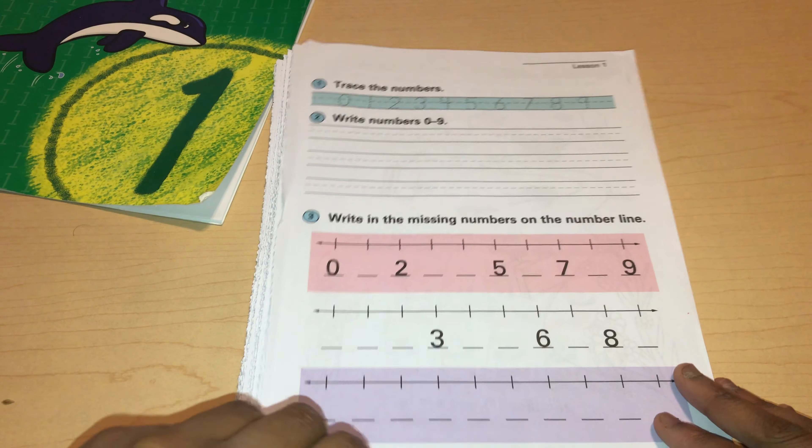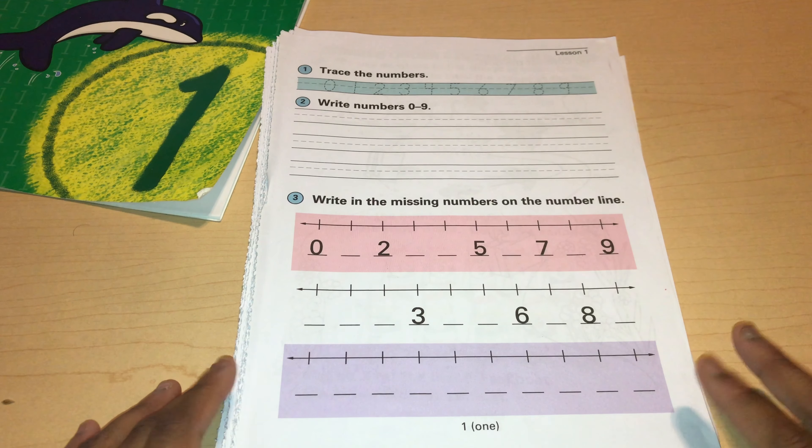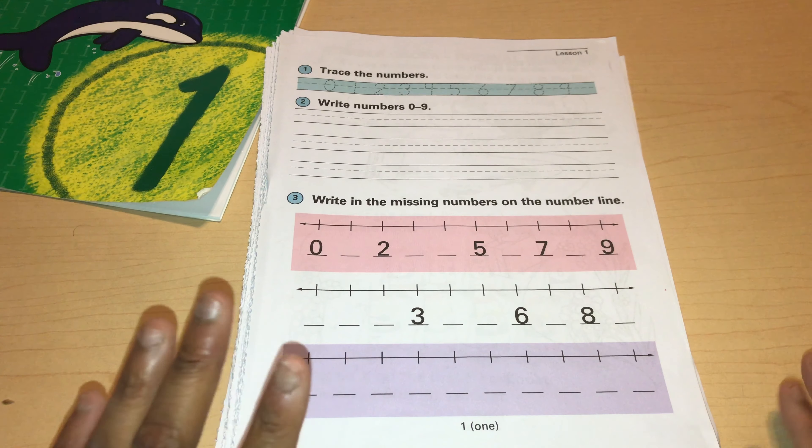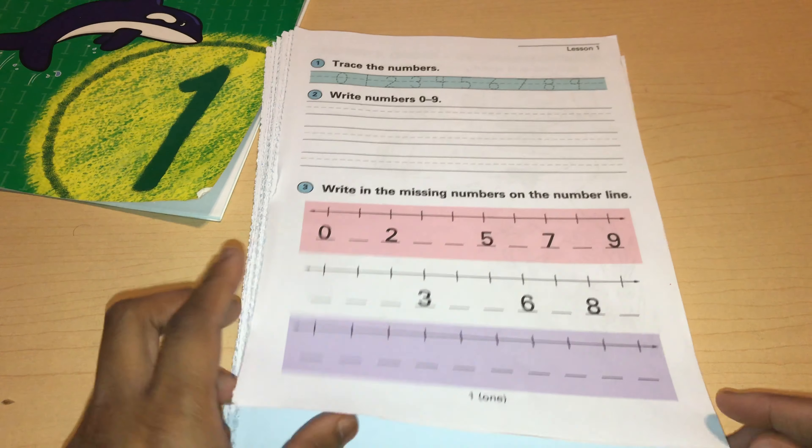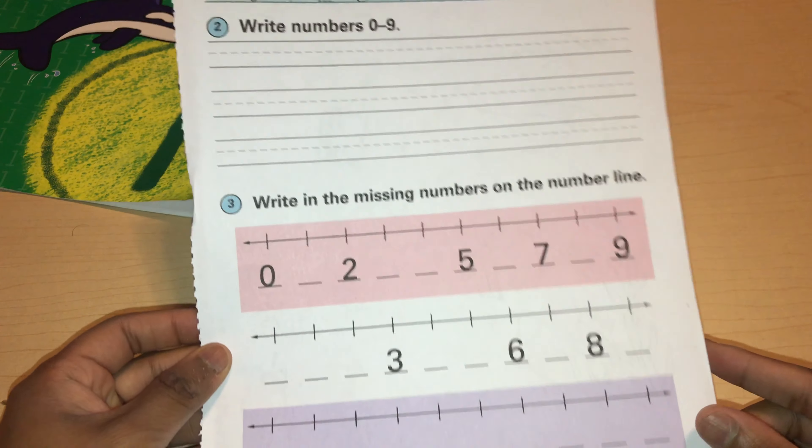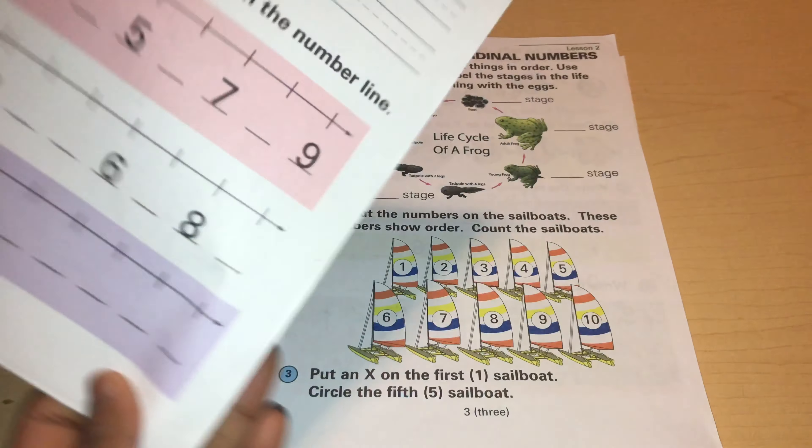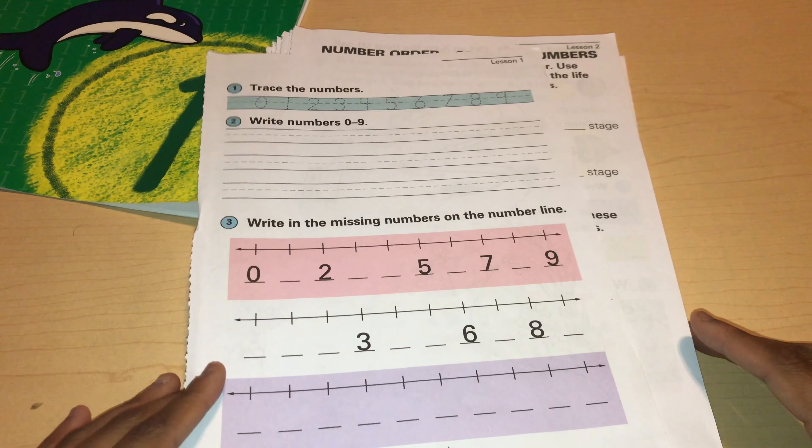This is lesson one. I'm not going to be going through every single lesson, I'll be skipping a couple of lessons. So this is lesson one. You can find the lesson number up here. And in the first lesson they have the child trace the numbers, write the numbers, write the missing numbers on the number line. Oh, and another thing, they use number lines here a lot in Horizons.